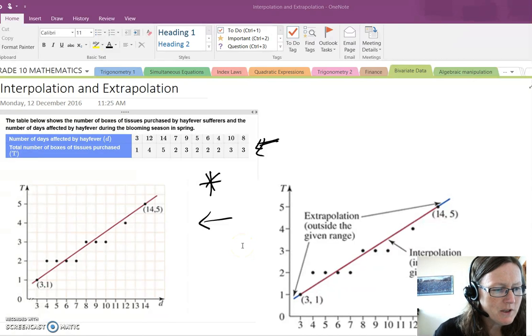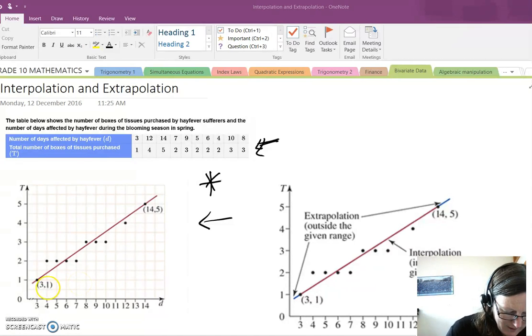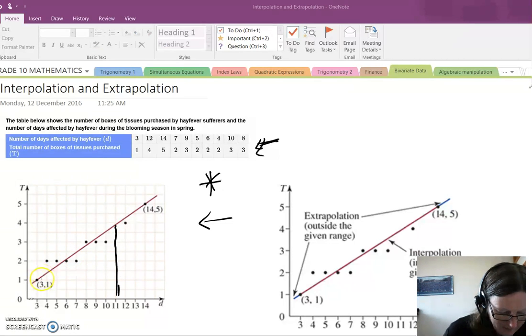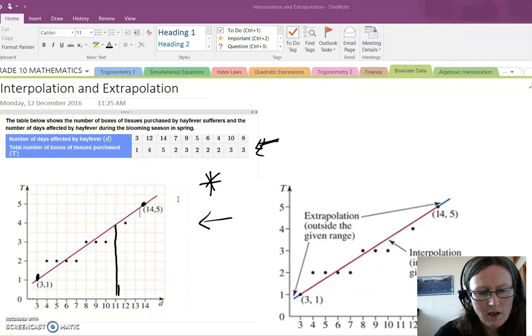If we were asked to make a prediction for 11 days, so for example, for 11 days, if the number of days affected by hay fever was 11, how many boxes of tissues would be purchased? Then 11 falls within the range of this graph. So you can go up here, and 11 days falls within the lowest point and the highest point. So we call that an example of interpolation. So we could make a prediction, reasonably reliably, how many boxes of tissues would be purchased.